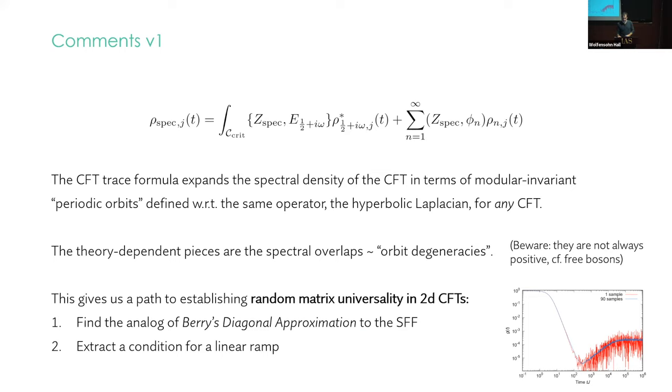So this is just a technical statement. This is true. And clearly it has the form of a Gutzwiller trace formula-like object now for a 2D CFT piece of the density. So these orbits are defined with respect to the same operator for any CFT. It's just a function of the modular invariance of the theory, and the piece that is theory dependent are the overlaps. Which you should think of as orbit degeneracies. That interpretation is a little iffy because it's actually easy to see they're not always positive. For example, the C equals one free boson. You can compute these and they're not always positive. So the interpretation as a degeneracy is a little bit funny, but I mean, so is the existence of this formula actually a bit surprising and mysterious. So that's just some feature of the 2D CFT avatar of the trace formula.